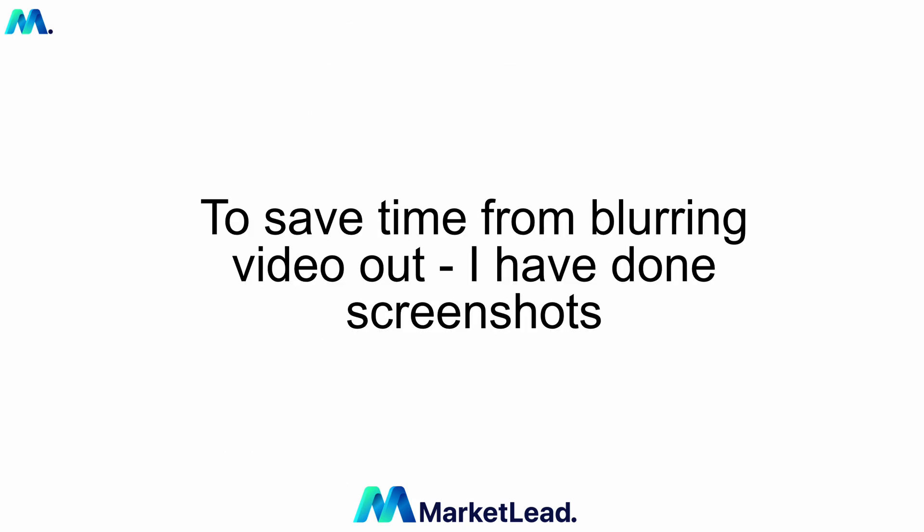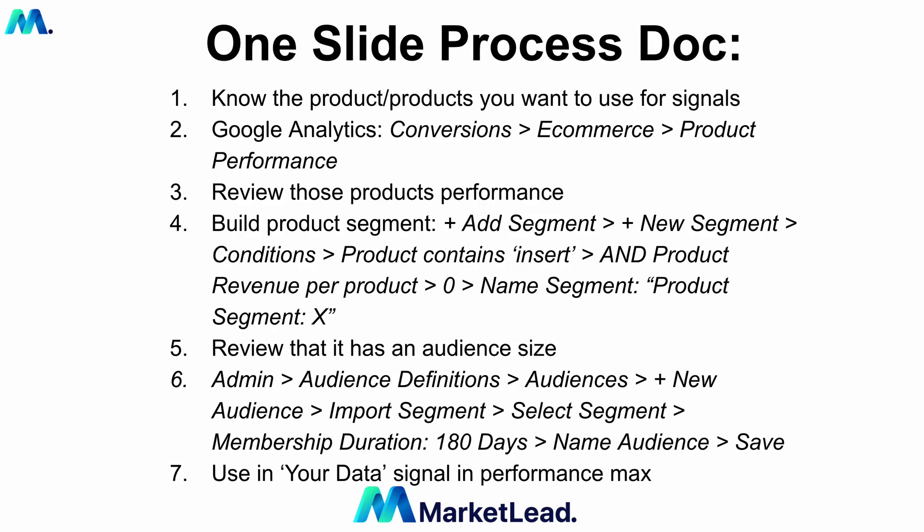To save time from blurring out the video, I've done screenshots. When we jump in, you'll want to know your product and the products you want to use for your signal. In Google Analytics, you'll go to Conversions > Ecommerce > Product Performance, then review those products' performance just to make sure there are sales and other data associated with it.